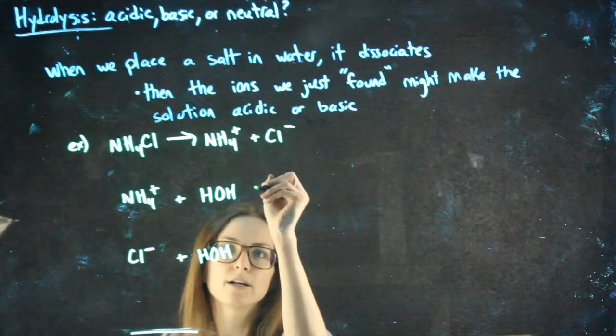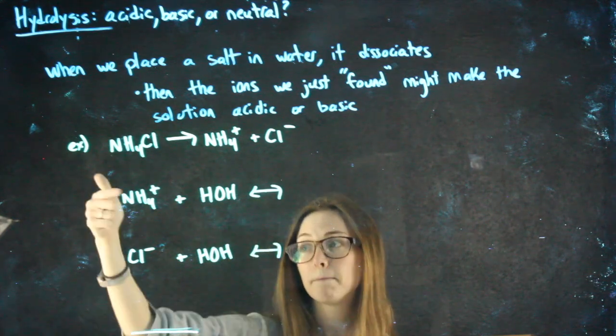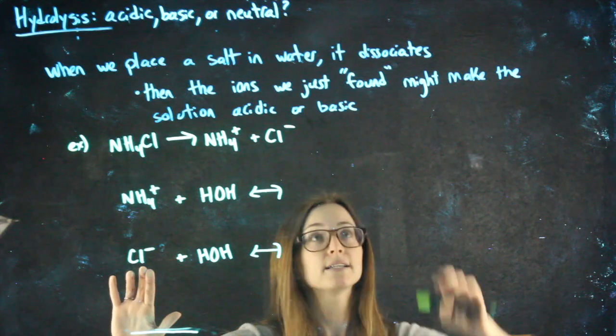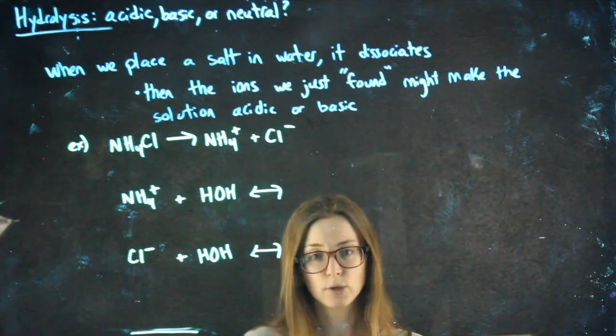So, these are going to be equilibrium arrows, because one of these might be a weak acid or a weak base, the NH4+ or the Cl-, right, that we just found hiding in that salt. And weak things use equilibrium arrows.